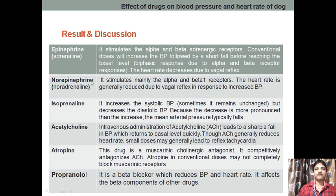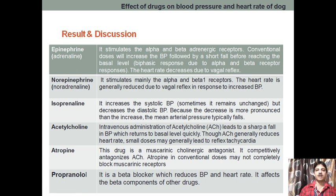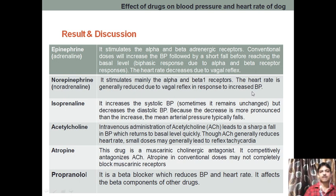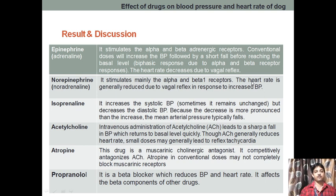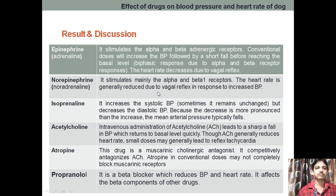Next is norepinephrine. Norepinephrine is again an adrenergic neurotransmitter — noradrenaline. It mainly stimulates alpha and beta-1 receptors. What we can observe is that heart rate is generally reduced due to the vagal reflex in response to the increased blood pressure. Blood pressure will be increased due to the alpha and beta receptor stimulation, but due to the vagal reflex, heart rate will be reduced when we give norepinephrine. So blood pressure increases while heart rate decreases.